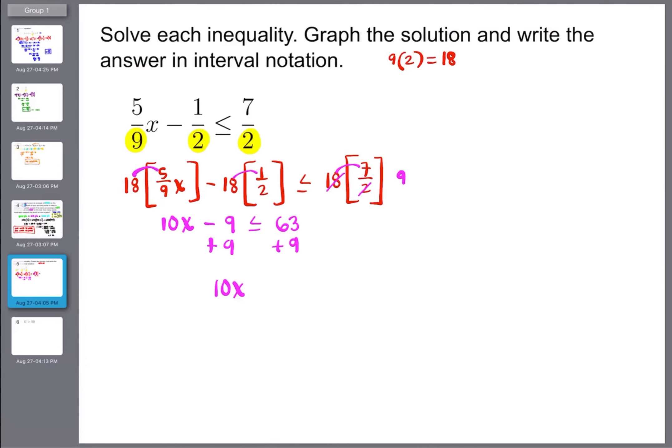So I have 10x is less than or equal to 72. I'll divide by 10. Notice I don't need to flip anything because I divided by a positive 10. So x is less than or equal to, but then we can reduce this. 72 divided by 10, 2 goes into both since they're even. So that would be 36 over 5. And then that does not reduce any further. So this is our answer.